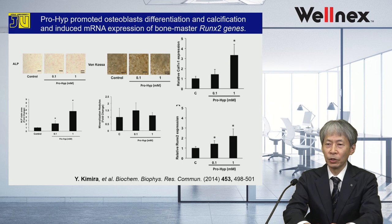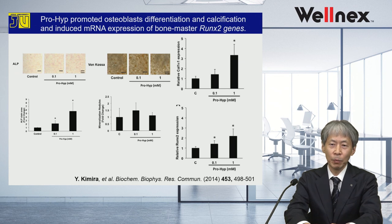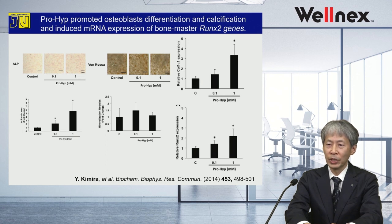This slide shows the effect of prolyl hydroxyproline on osteoblast differentiation. In the left panel, active staining reports that prolyl hydroxyproline induced alkaline phosphatase (ALP) activity — ALP being one of the osteoblast differentiation markers. In the center panel, prolyl hydroxyproline induced calcification in MC3T3-E1 cells, demonstrated by von Kossa staining. In the right panel, RNA from MC3T3-E1 cells treated with prolyl hydroxyproline was collected and mRNA levels were measured by real-time PCR. Prolyl hydroxyproline induced COL1A1 and RUNX2 gene expression levels in a dose-dependent manner. These data show that the osteoblast master gene RUNX2 was regulated by prolyl hydroxyproline in order to activate osteoblast differentiation.